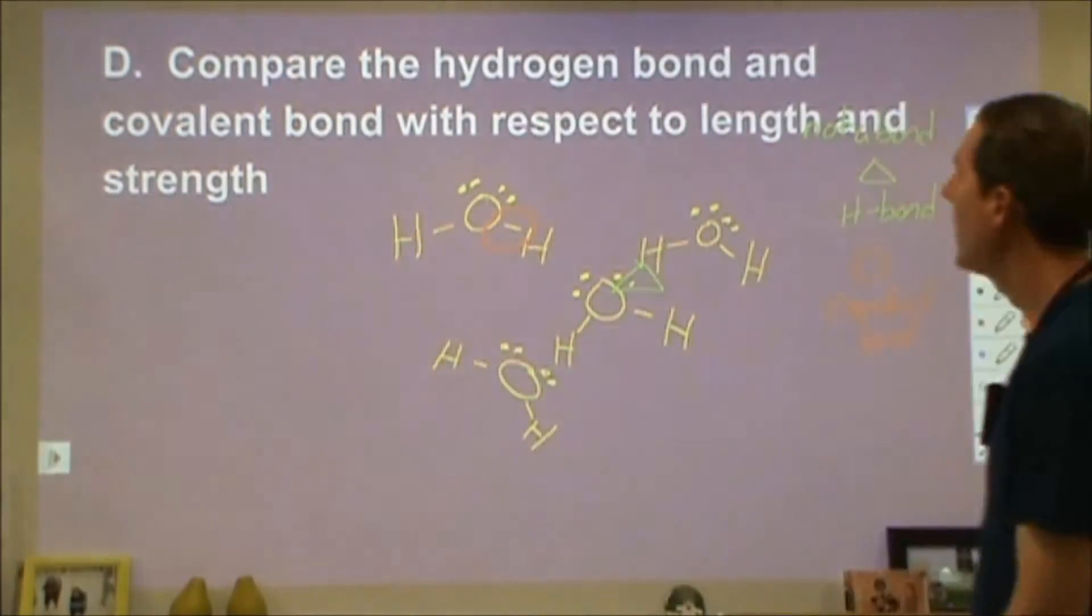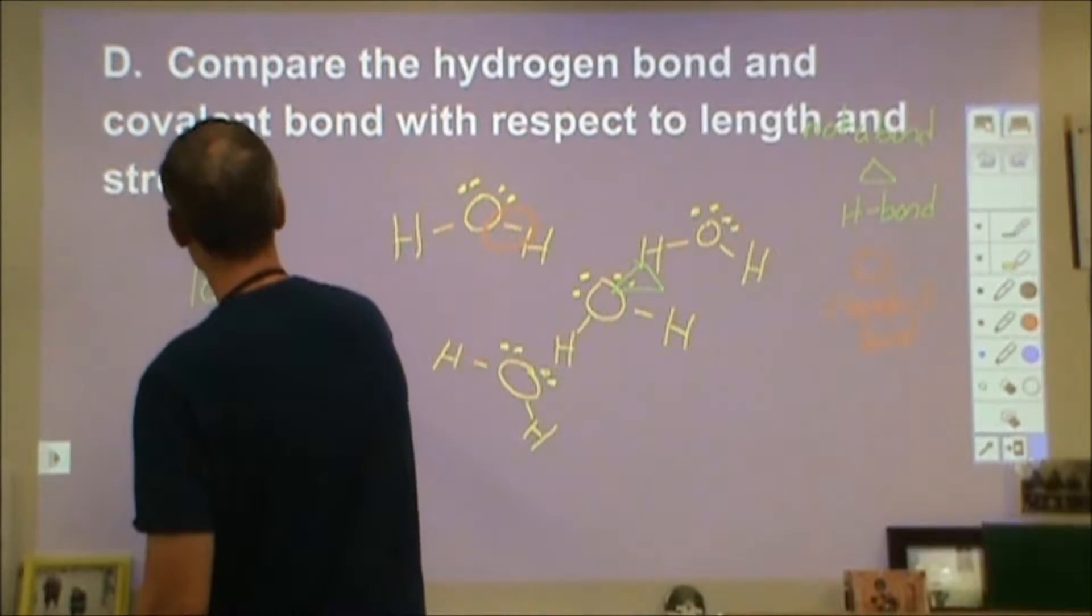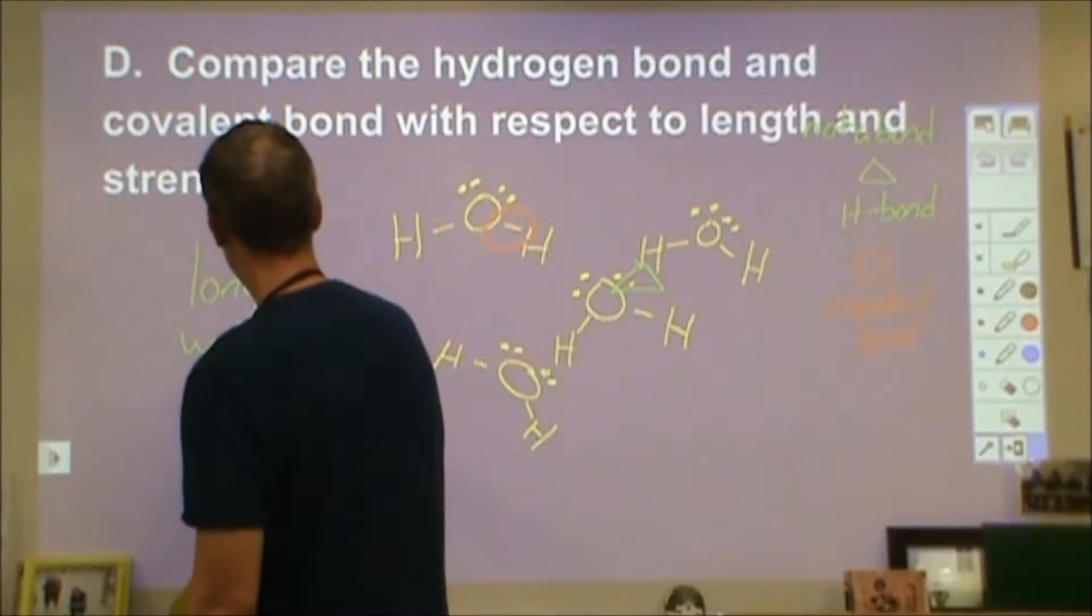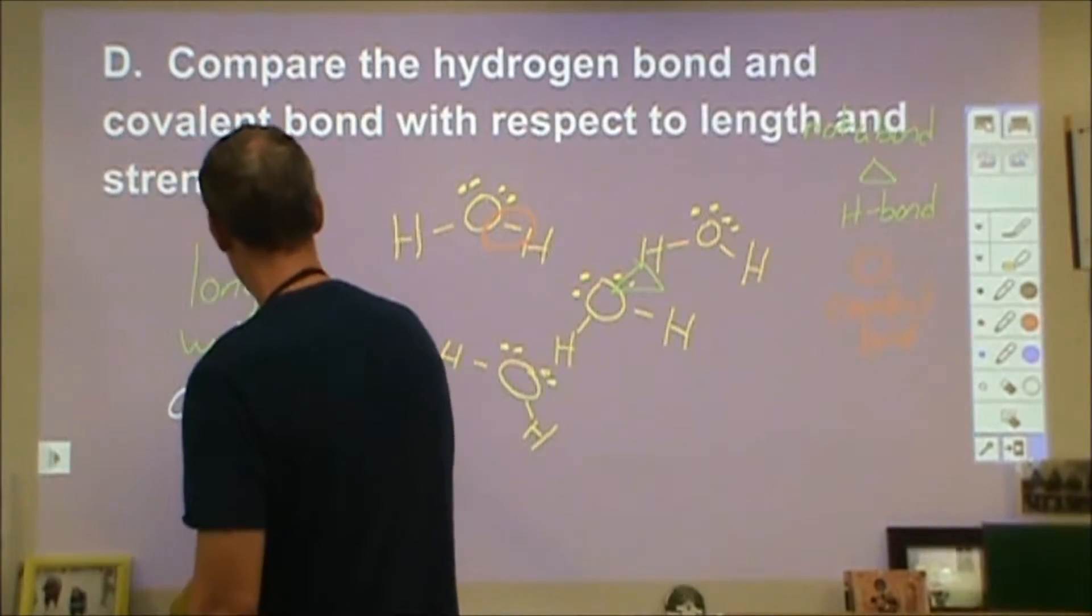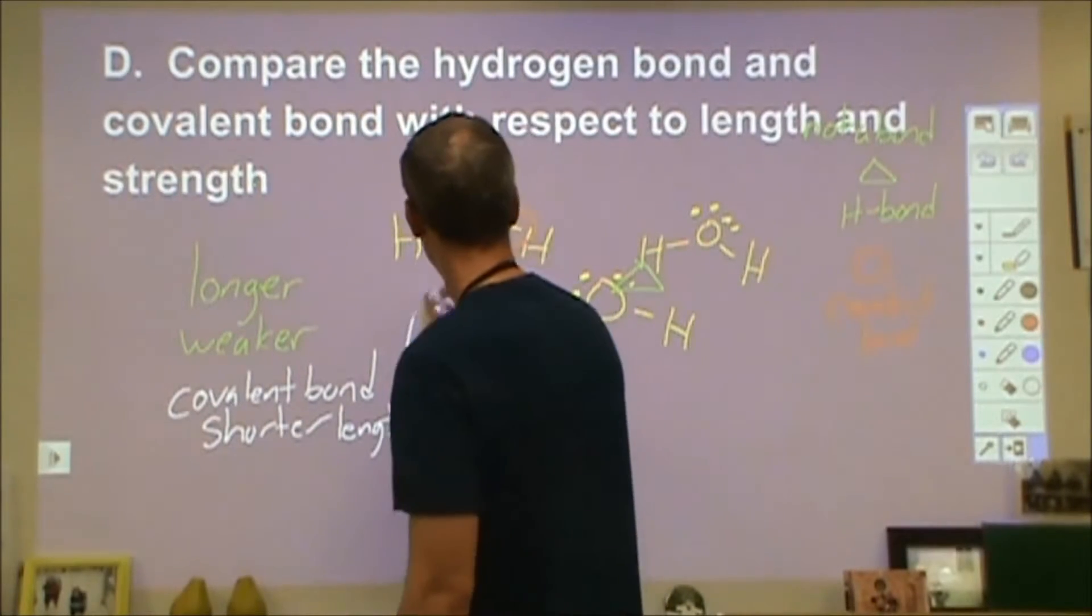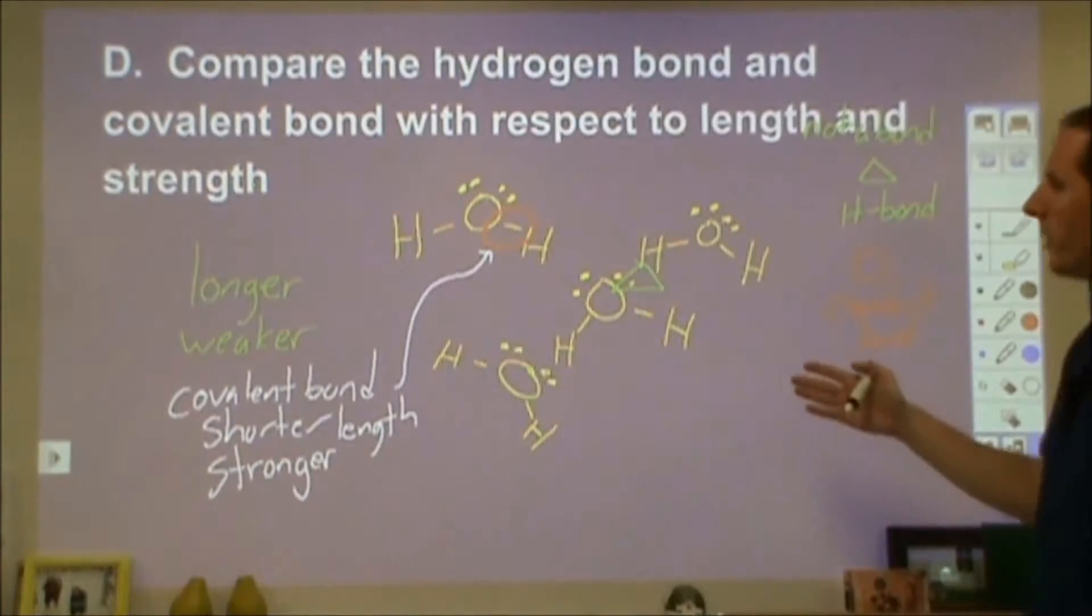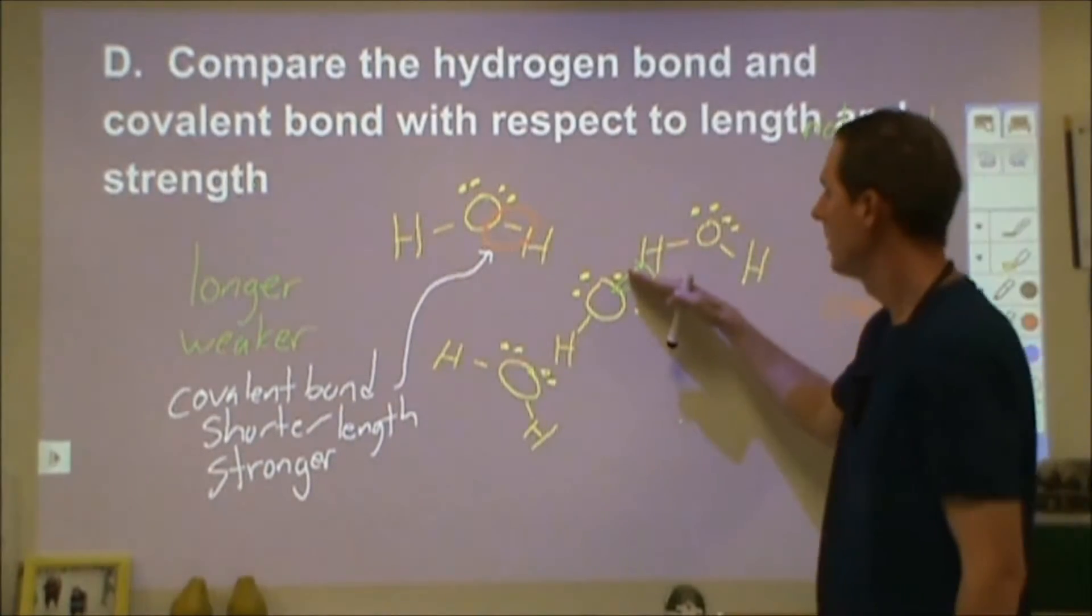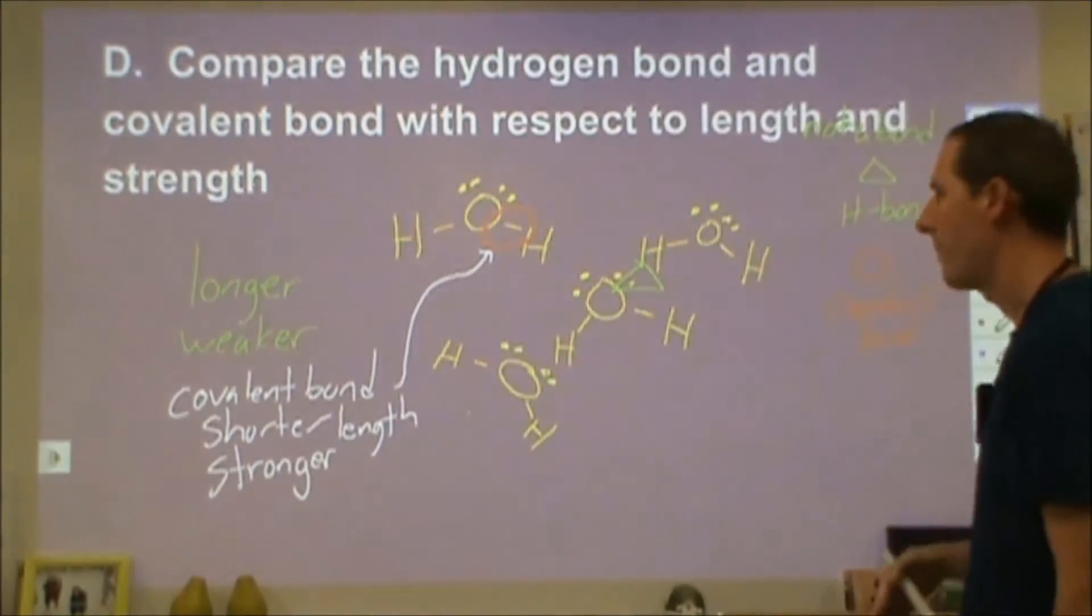Then it says compare the hydrogen bond and covalent bond with respect to length and strength. The hydrogen bond is going to be longer and weaker in strength. For the covalent bond, that is going to be a shorter length and a much stronger interaction. We like to differentiate that in terms of different processes. Chemical reactions versus physical processes like melting and boiling, sublimation, dissolving will usually disrupt hydrogen bonds. Whereas electrolysis producing hydrogen oxygen gas will involve breaking covalent bonds.